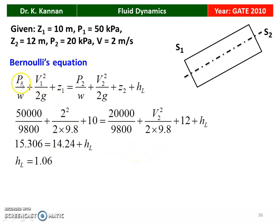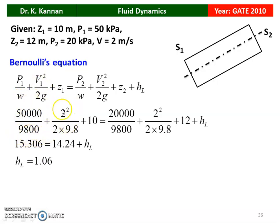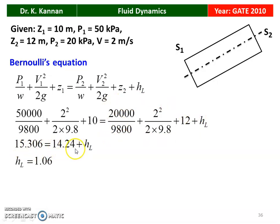Using Bernoulli's equation: P1/(ρG) + V1²/(2G) + Z1 = P2/(ρG) + V2²/(2G) + Z2 + H_L. Substituting numerical values: 50,000/9800 + 2²/(2×9.81) + 10 = 20,000/9800 + 2²/(2×9.8) + 12 + H_L. The left-hand side gives 15.306, equal to the right-hand side total energy of 14.24 plus H_L.